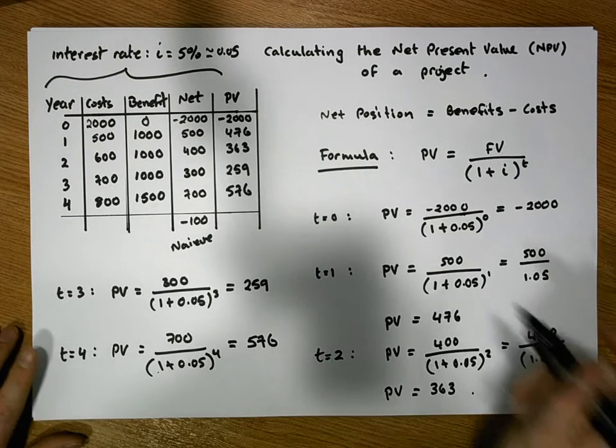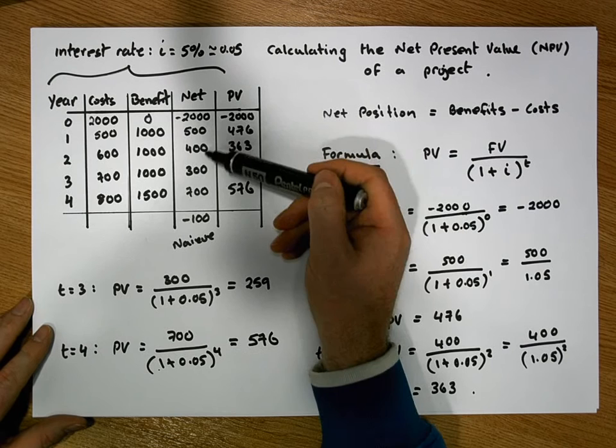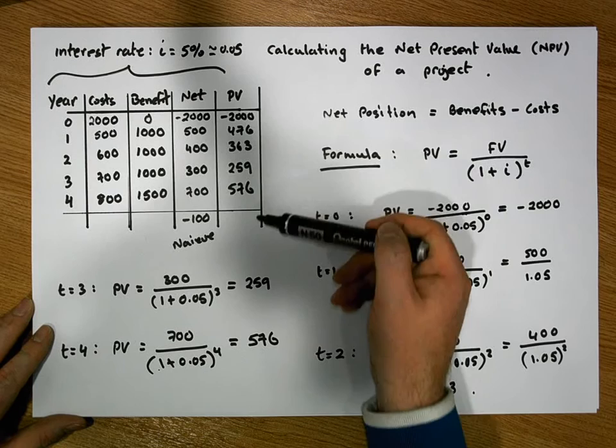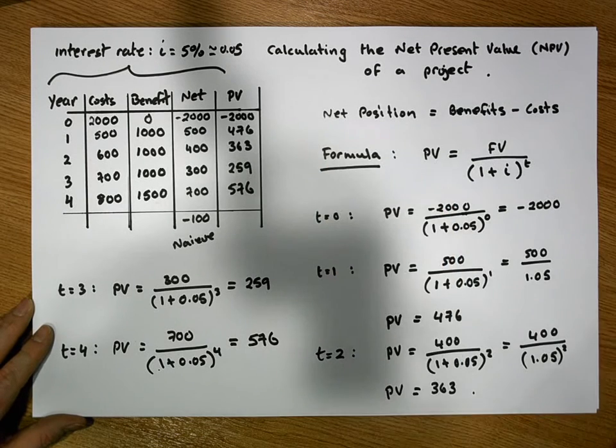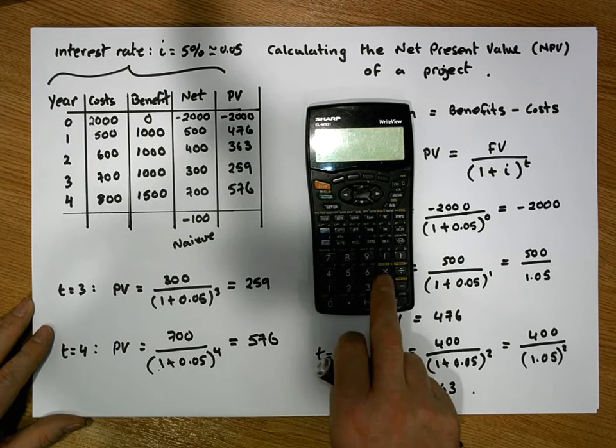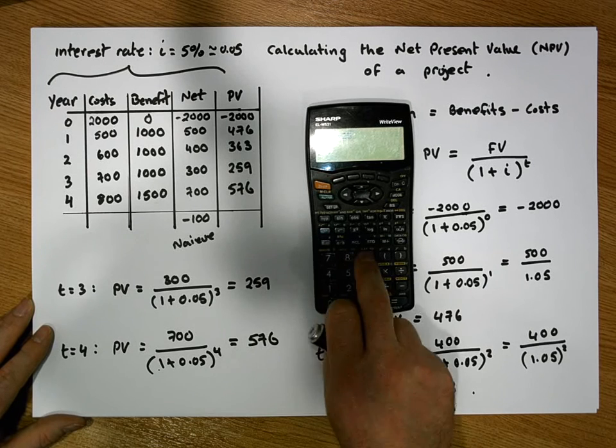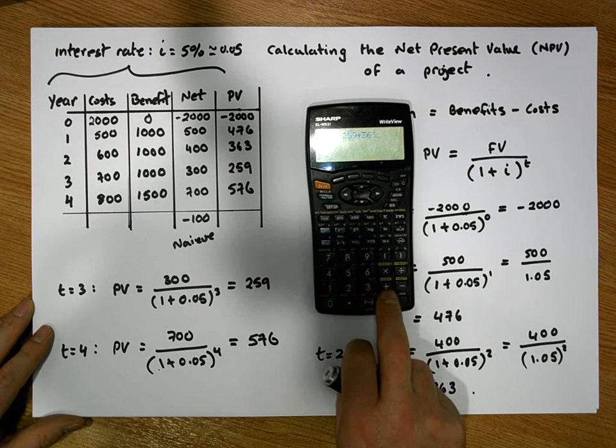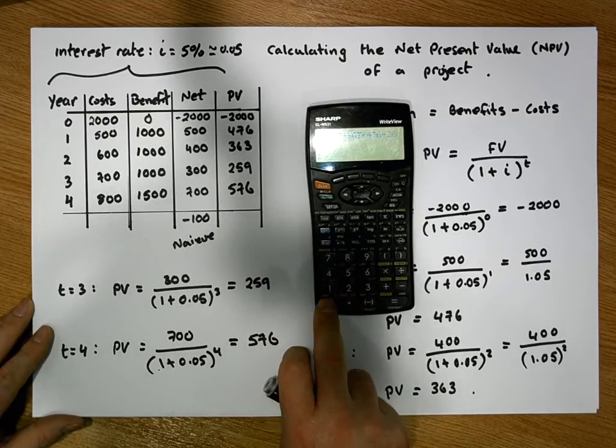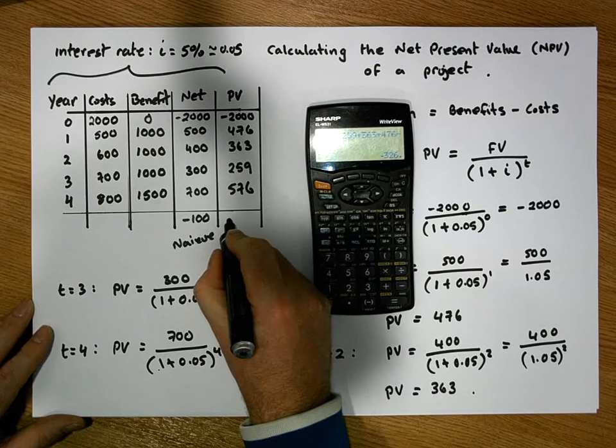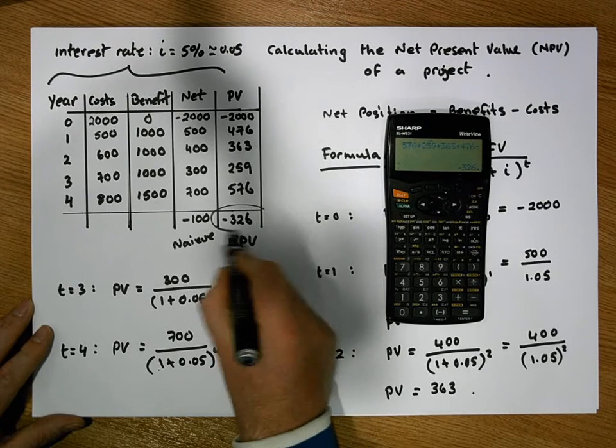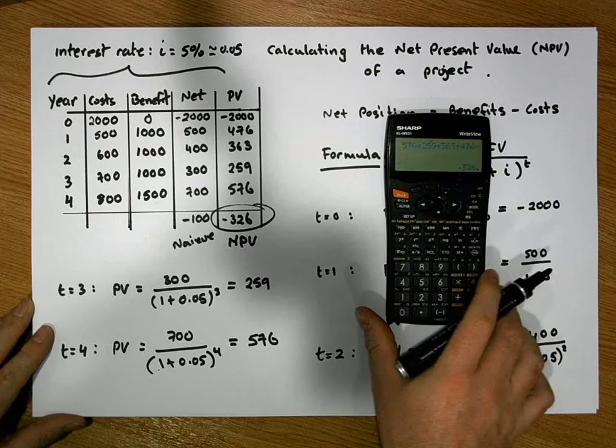So now what we have for this particular project is we have all of the net positions discounted back into today's terms. So everything represents an amount of money in today's terms. So the net present value is the sum of the present values. So it's 576, plus 259, plus 363, plus 476, and minus the 2,000 euros, minus 2,000 euros, gives us a net position of minus 326 euros. And this is our NPV. This value here is the net present value of this particular project.